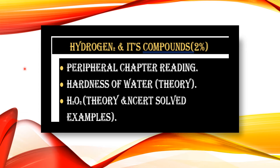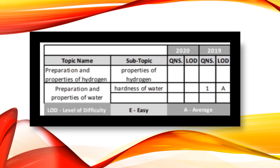Hydrogen and its compounds holds 2% weightage and is a relatively easy topic. You should give it one or two superficial/peripheral readings. The most important topic is the hardness of water theory. You must also solve NCERT solved examples for hydrogen peroxide (H₂O₂) and hydrogen production. In 2019, a question on hardness of water was asked at average difficulty.